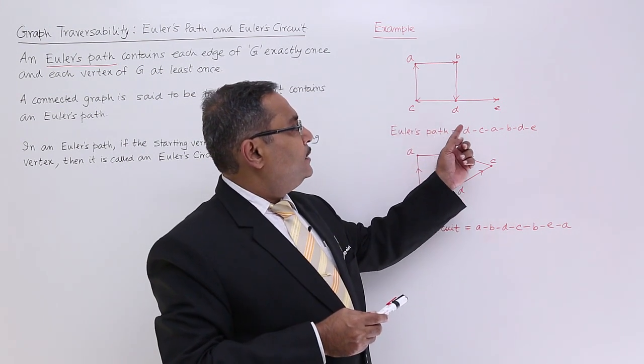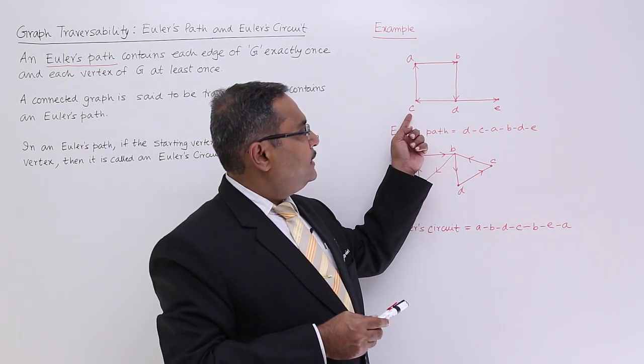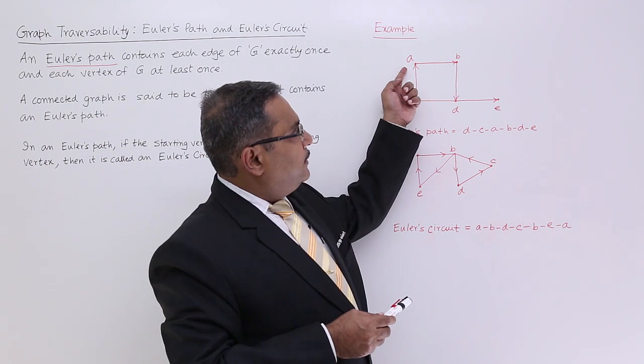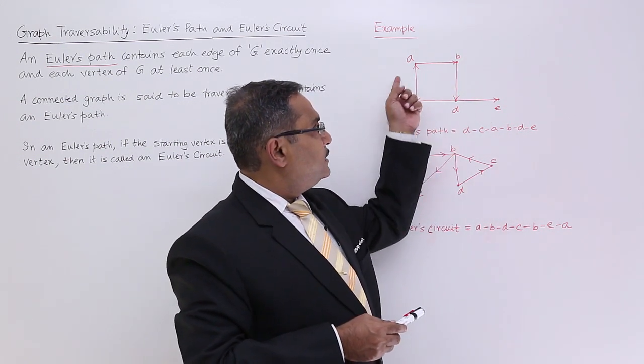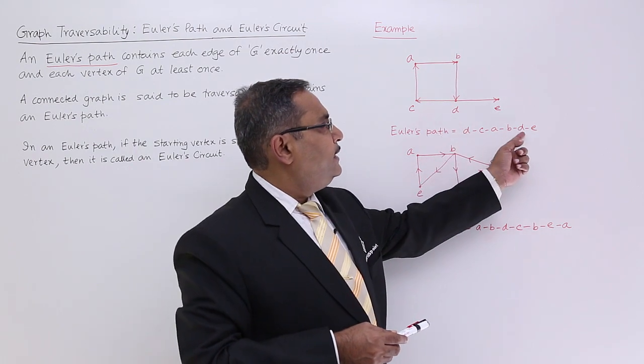Now we are starting from D. D to C, C to A, then A to B, then B to D. You see, all these four edges we have traversed.